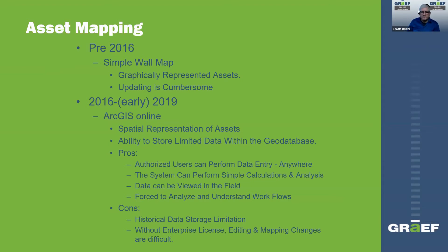In 2016 they started with a simple wall map, where they got all of their facilities located and graphically could see on the map where their water utilities were. But it was still a cumbersome updating process — they had an outside firm do those map updates, and just like before they would wait until the end of the construction season to do those updates, so things were kind of out of date as they went along.